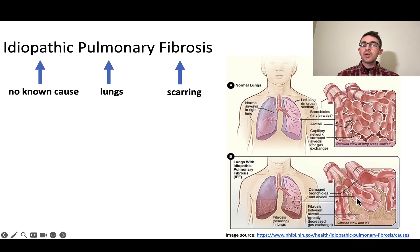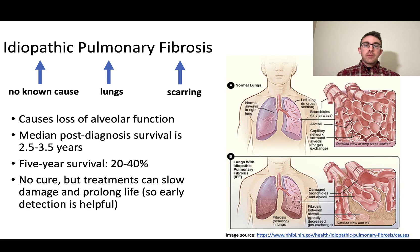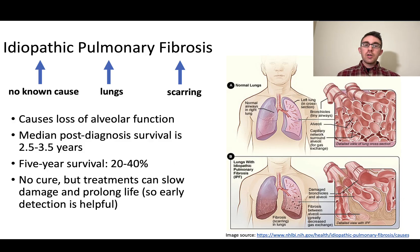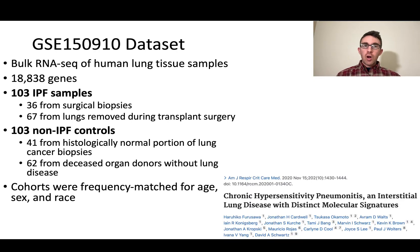It's a disease with no known cause that involves scarring of the lung tissue. It causes a loss of alveolar function. Median post-diagnosis survival is only two and a half to three and a half years, and the five-year survival rate is only 20 to 40 percent. So it's obviously a pretty serious disease with not a very good prognosis. There's no cure, but treatments can slow damage and prolong life, so early detection is helpful for patients.